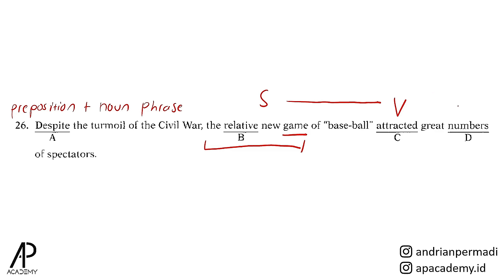Pilihan D, numbers. Numbers adalah noun, lebih tepatnya countable noun. Salah satu ciri countable noun adalah bahwa noun tersebut harus diketahui jumlahnya. Numbers memiliki jumlah yang banyak atau plural, yang bisa kita lihat dari akhiran huruf S yang menunjukkan bahwa suatu noun berjumlah banyak atau plural. Oleh karena itu, jawabannya adalah B.